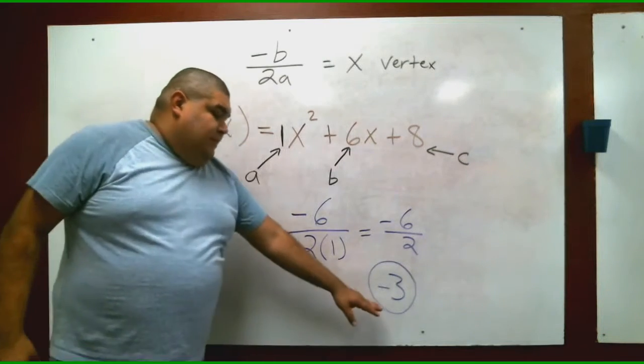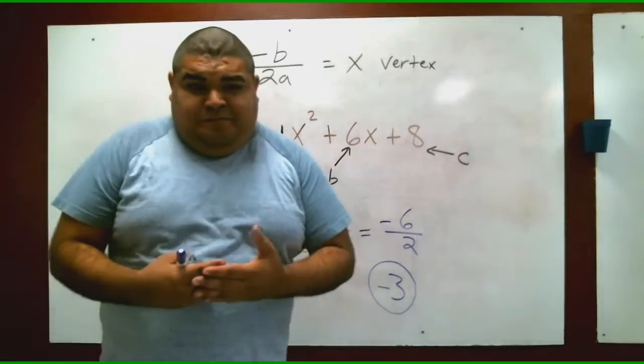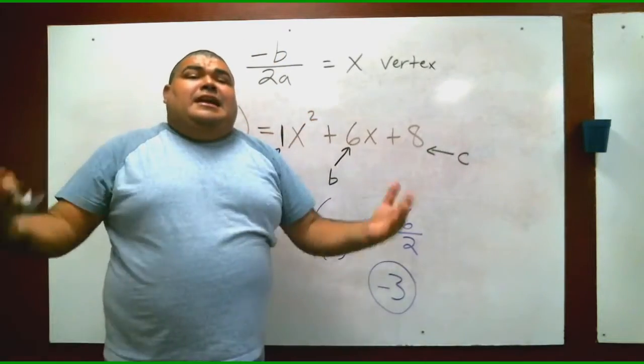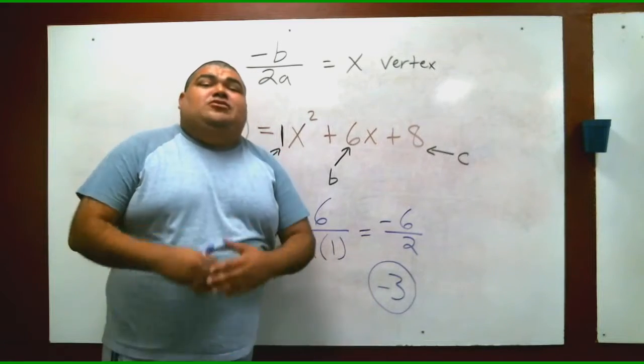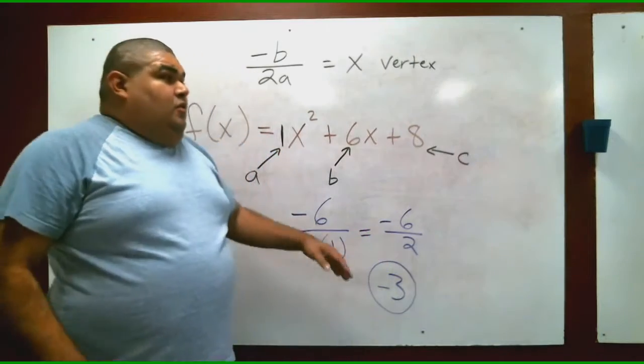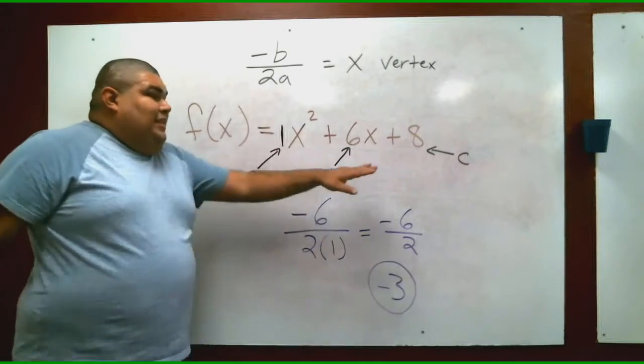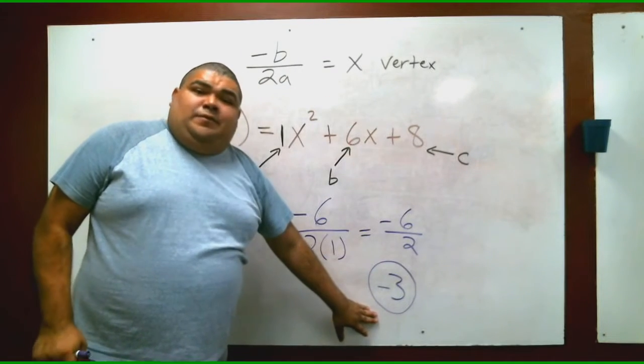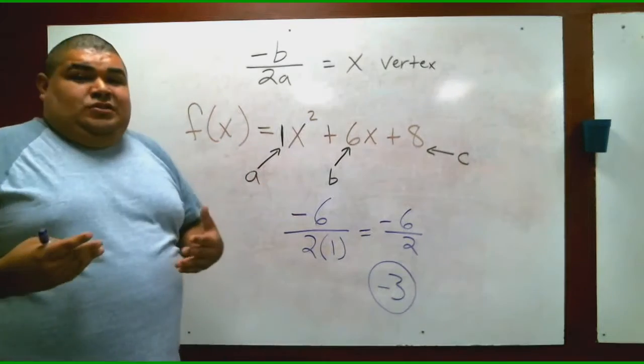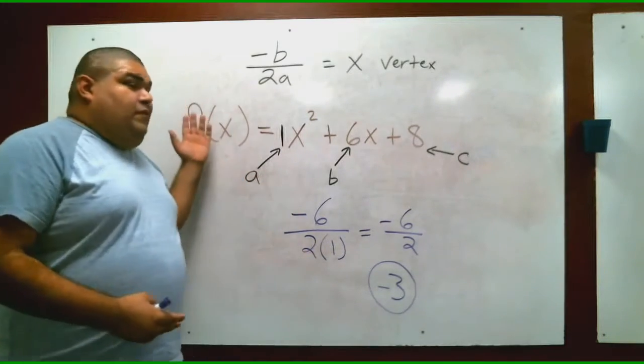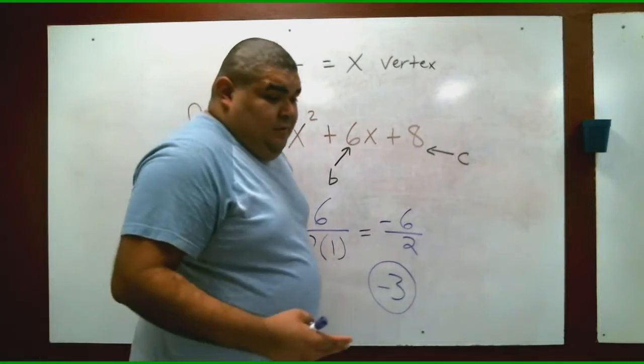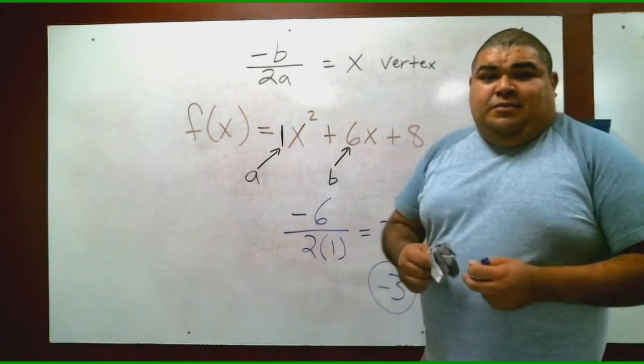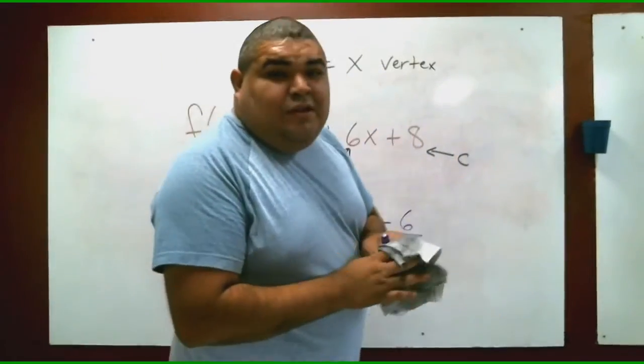Now that we have that -3, that's as far as we're going to go today. All we're doing today is just solving for our x-vertex. Next class we're actually going to solve for that x-vertex and actually graph the equation. So all you're doing today is just labeling it a, b, and c, using the equation for x-vertex to solve for it. In this case, our answer is -3. If you have any questions, let me know. Make sure you have everything written down on your notes. If you need more time, pause the video. If not, I'm going to go ahead and erase it so I can write down your assignment.